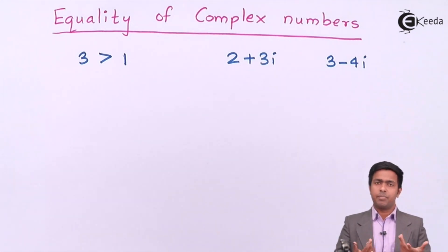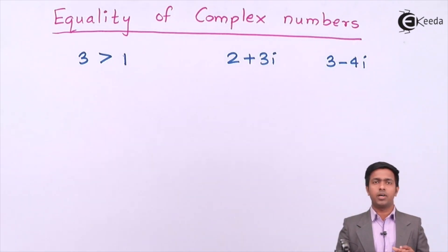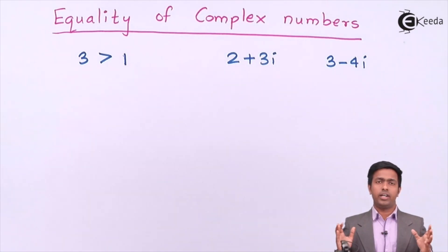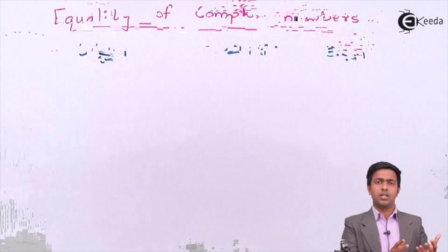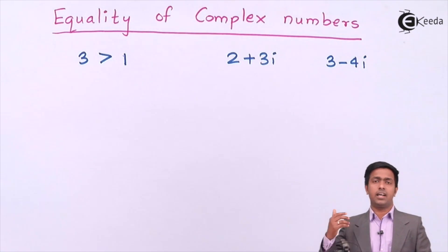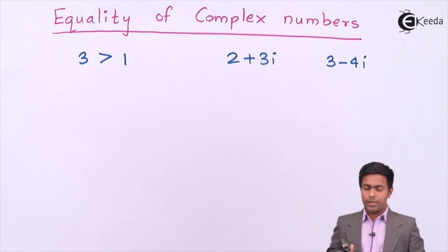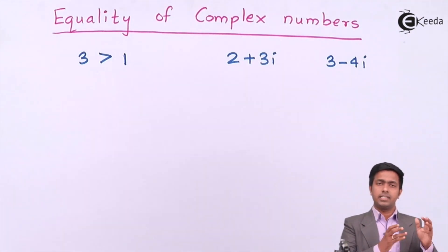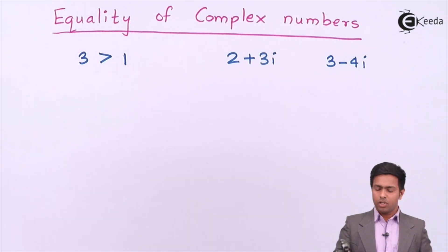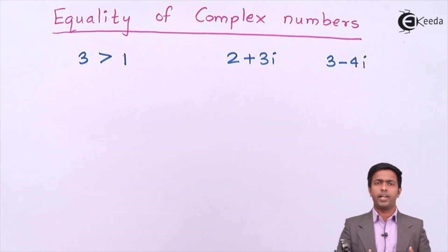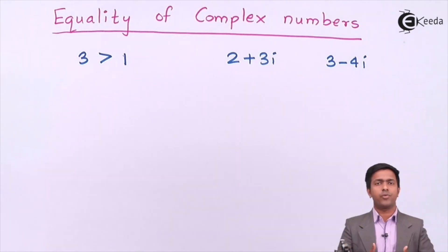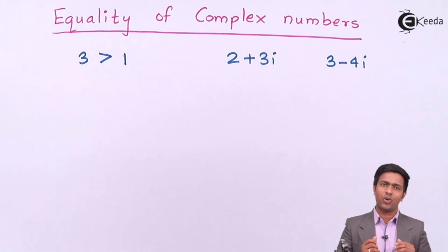But that is not true, because in the case of complex numbers, no order relation exists. We can never say that one complex number is greater or less than another complex number, because it has two parts — real and imaginary. So what we can predict about complex numbers is only two relations: either two complex numbers are equal, or they are not equal.